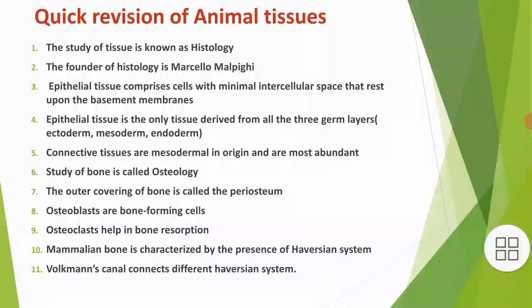Epithelial tissues comprise cells with minimal intercellular space that rest on basement membranes. Epithelial tissue is the only tissue derived from all three germ layers: ectoderm, mesoderm, and endoderm.